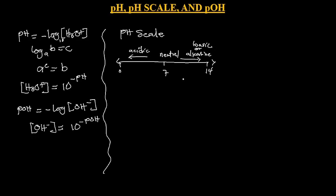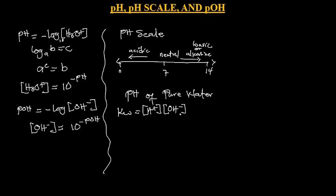Now let's consider the pH of pure water. Remember we said KW is the equilibrium constant of water and it equals the product of [H+] and [OH−], which is given as 1.0 times 10 exponent minus 14. From this expression, we know that at equilibrium [H+] equals [OH−]. If these two are the same, let's call it X.